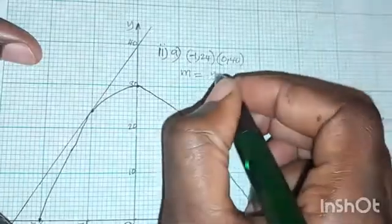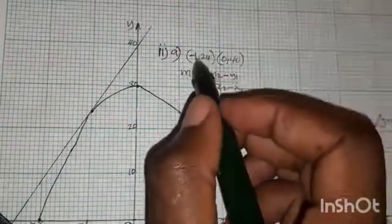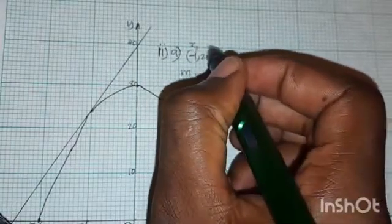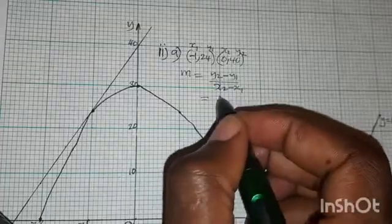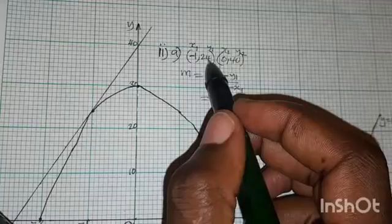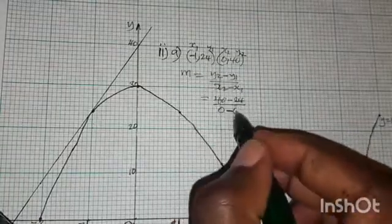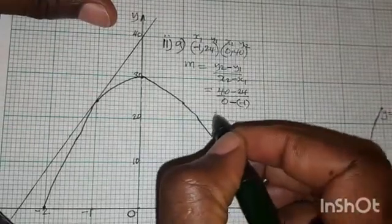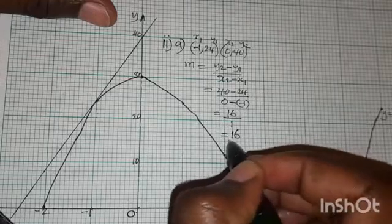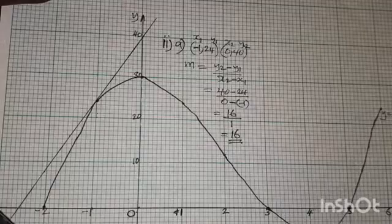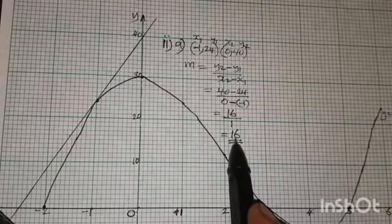Using the gradient formula M = (Y2 − Y1) / (X2 − X1), with point 1 as (−1, 24) and point 2 as (0, 40): M = (40 − 24) / (0 − (−1)) = 16 / 1 = 16. So the estimated gradient is 16. Note this is just an estimate, so your answer should be close to the true gradient value.